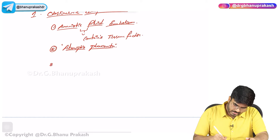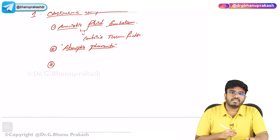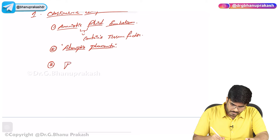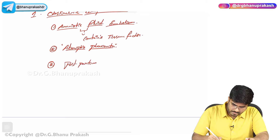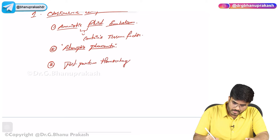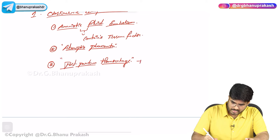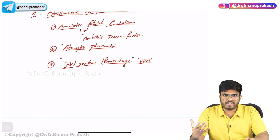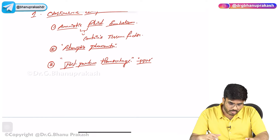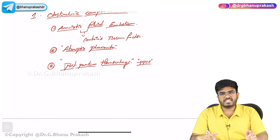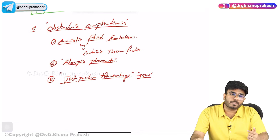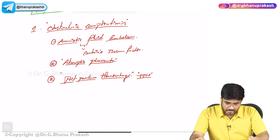The third obstetric complication is postpartum hemorrhage (PPH). PPH can also be considered as tissue damage that triggers disseminated intravascular coagulation. So obstetric complications — amniotic fluid embolism, abruptio placenta, and PPH — can all lead to DIC.